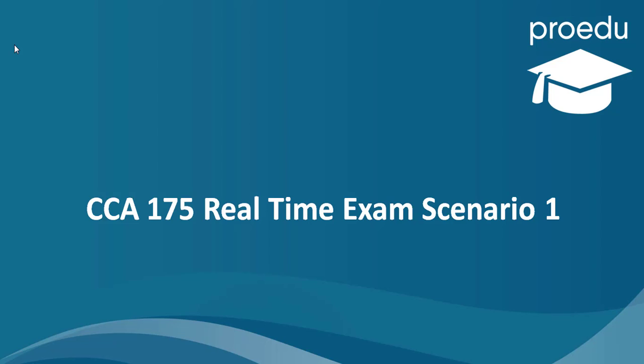In this lecture we will talk about CCA-175 real time exam scenario 1. In CCA-175, each question contains a data description section and an output requirement section. The data description tells you about the input data, its location in HDFS, the file format, delimiter, and schema. The output requirement contains multiple sub-requirements, and we have to understand each one clearly in order to answer the question correctly.